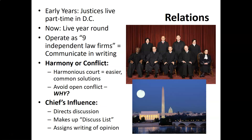Now, the relations of our Supreme Court. In the early years, justices only lived part-time in Washington, D.C. We actually didn't have a Supreme Court building until 1935. Now they live in D.C. year-round — it's a full-time job. Even though we have nine justices who are supposed to work together, for all intents and purposes they are operating as nine independent law firms, and most of their communication is done in writing, email, or over the phone because they have so much work.